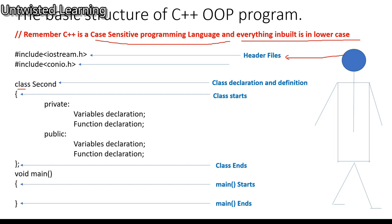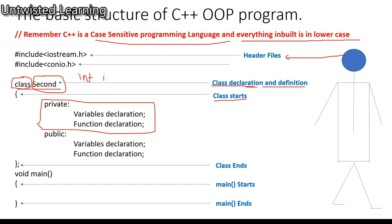For example, you can have a second year class declared as 'class second'. The keyword 'class' is followed by the class name. This is the class declaration and definition. Inside the curly brackets, the class body starts. The class has two sections: a private section and a public section. The class ends with a closing curly bracket followed by a semicolon — the semicolon is very important.